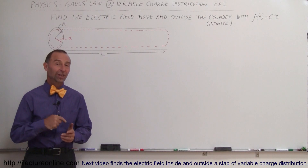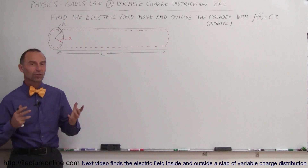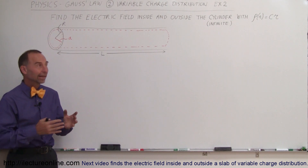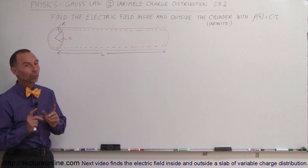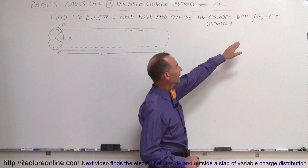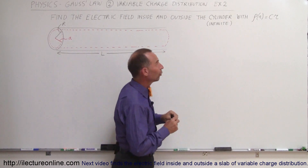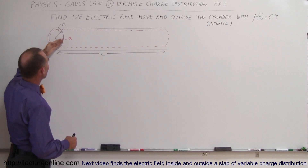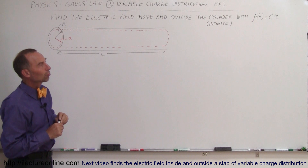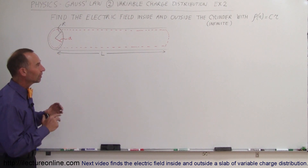Welcome to ElectronLine. Here's a second example of how to use the Gaussian surface methodology using the Gaussian equation to find the electric field inside and outside a cylinder with variable charge density. It's not a uniform charge density — it's a charge density as a function of the radius away from the center. When R is zero there's no charge; when R is at the very edge of the cylinder you have a maximum charge density of C times the radius of the cylinder.